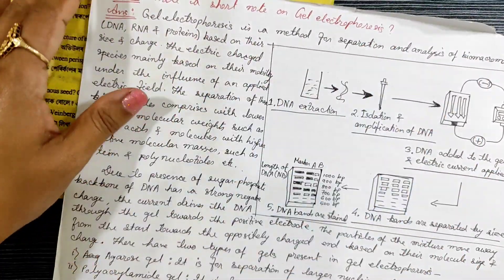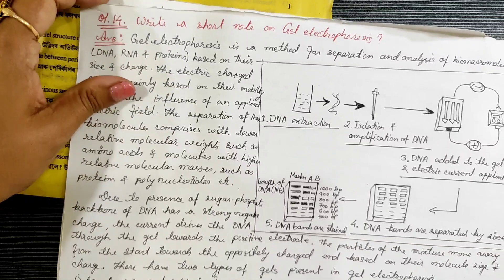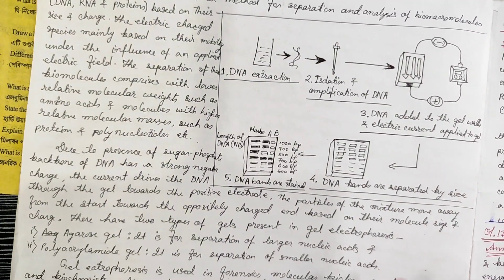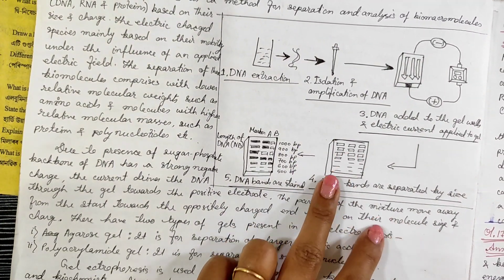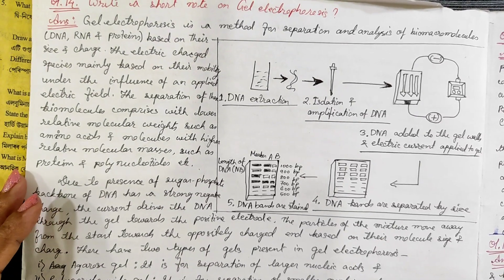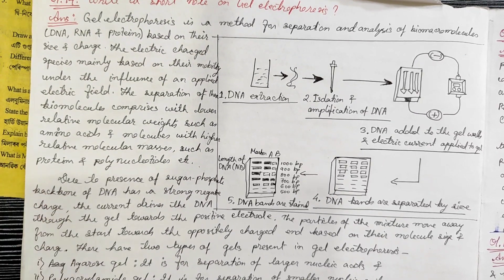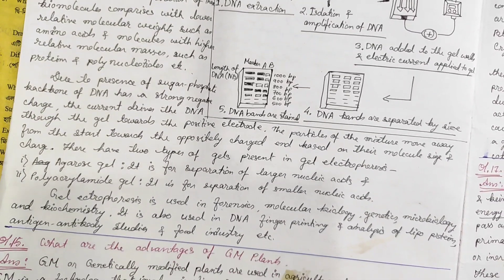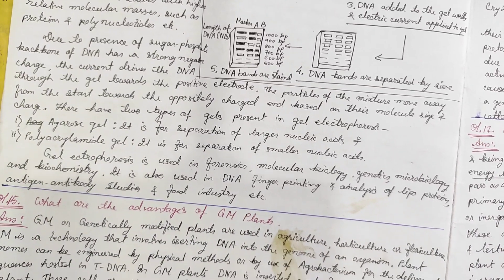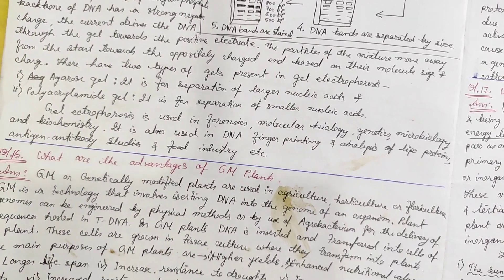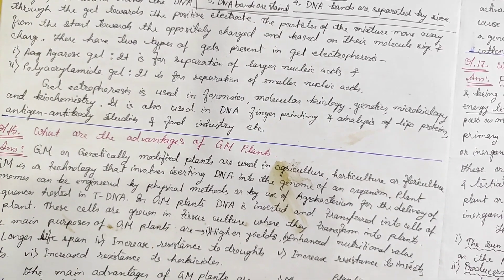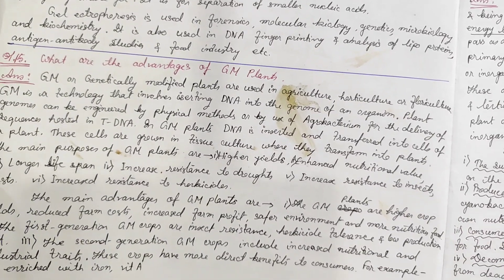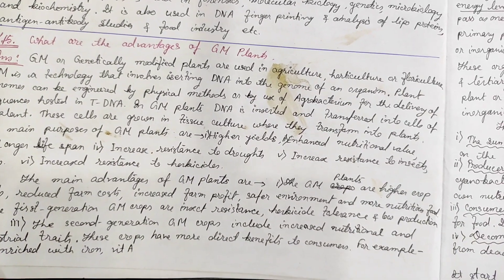Write a short note on gel electrophoresis. Next question: what are the advantages of GM plants — genetically modified plants — with examples?